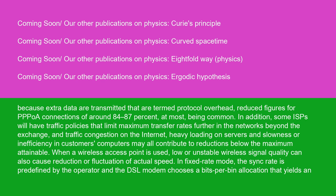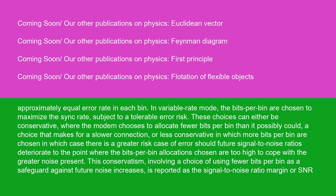When a wireless access point is used, low or unstable wireless signal quality can also cause reduction or fluctuation of actual speed. In fixed rate mode, the sync rate is predefined by the operator and the DSL modem chooses a bits-per-bin allocation that yields an approximately equal error rate in each bin. In variable rate mode, the bits per bin are chosen to maximize the sync rate, subject to a tolerable error risk. These choices can either be conservative — where the modem allocates fewer bits per bin than it possibly could, making for a slower connection — or less conservative, where more bits per bin are chosen but with greater risk if future signal-to-noise ratios deteriorate. This conservatism, involving fewer bits per bin as a safeguard against future noise increases, is reported as the signal-to-noise ratio margin, or SNR margin.